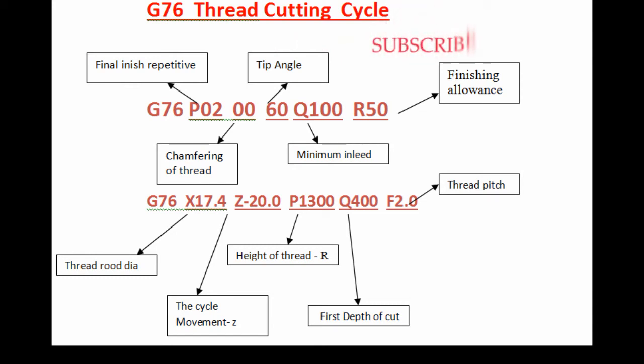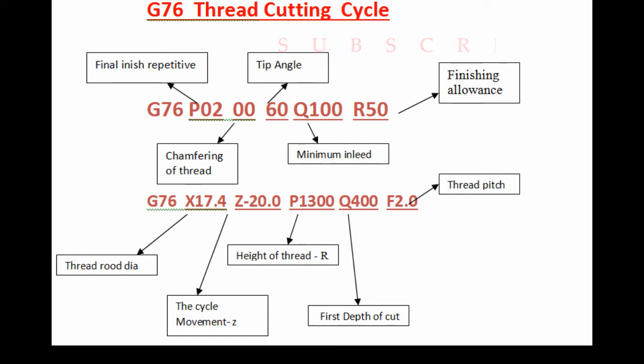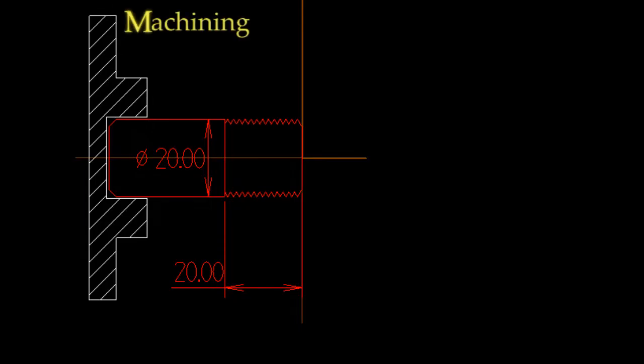F2 is the feed value. If the pitch is 1.5mm, the feed F is 1.5mm pitch. When the pitch changes, the height and root diameter values also change accordingly.